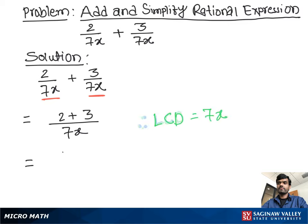2 plus 3 equals 5, so the answer is 5 over 7x. This is our final answer.